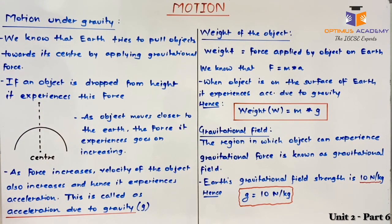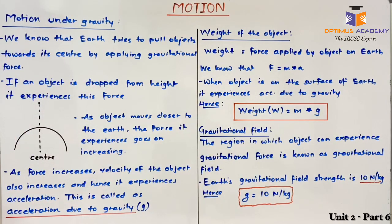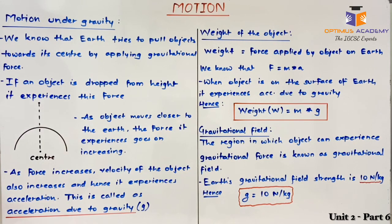To discuss this, we will take an example of two magnets kept nearby each other. If two magnets are kept just next to each other, they apply force on each other — either attractive or repulsive. But if these two magnets are kept further apart, they will not be able to apply the same amount of force. So as distance increases, the effect of the force decreases, meaning force and distance are inversely proportional.